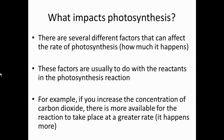So what impacts photosynthesis? What can influence how quickly it happens? Several different factors can affect the rate of photosynthesis, and these factors are usually to do with the reactants in the photosynthesis reaction — the sunlight, the carbon dioxide, and the water. They can affect how quickly or slowly photosynthesis happens. For example, if you increase the concentration of carbon dioxide, there's more available for the reaction to take place at a greater rate. If there's a lot more carbon dioxide around the plants, the plant can take in more, so there's more for the reaction to happen. Carbon dioxide concentration is one factor that can influence the rate of photosynthesis.